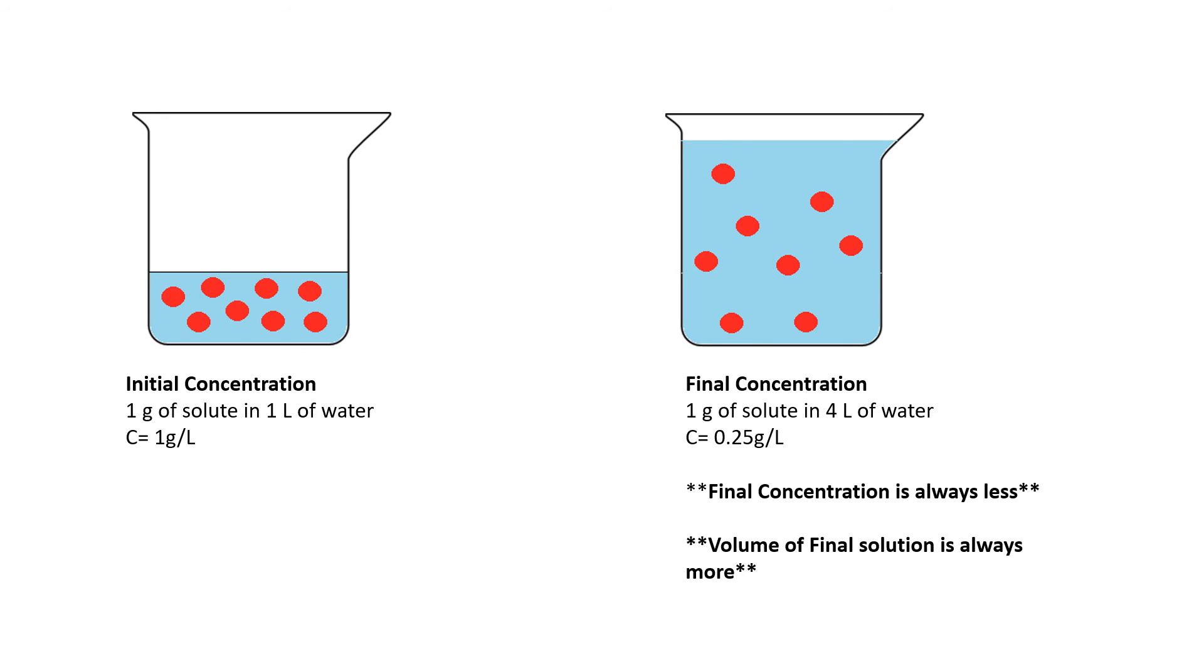So if we're looking at what we originally have and what we finally have, we have more solvent. We have the same amount of solute, but because there's more solvent, it drops the overall concentration. And because we add in more solvent, our total volume increases.